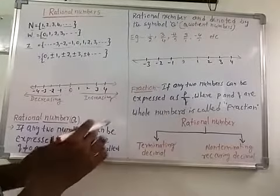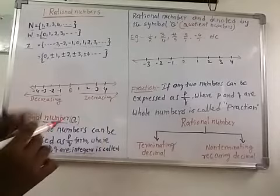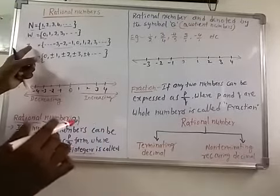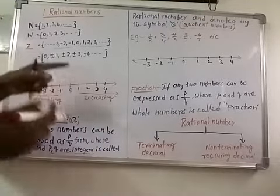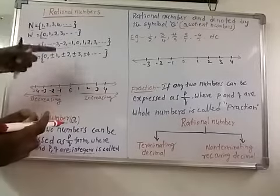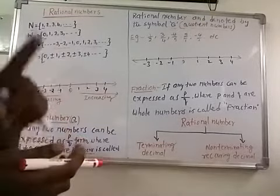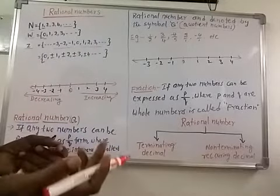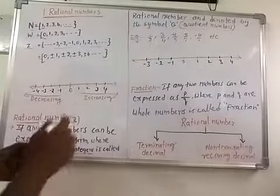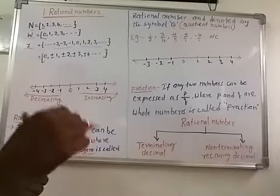This means natural numbers are rational numbers, whole numbers are rational numbers, and integers are rational numbers. For example, 1 = 1/1, 2 = 2/1, 3 = 3/1 — these are natural numbers and also rational numbers, since they are in the form p/q.